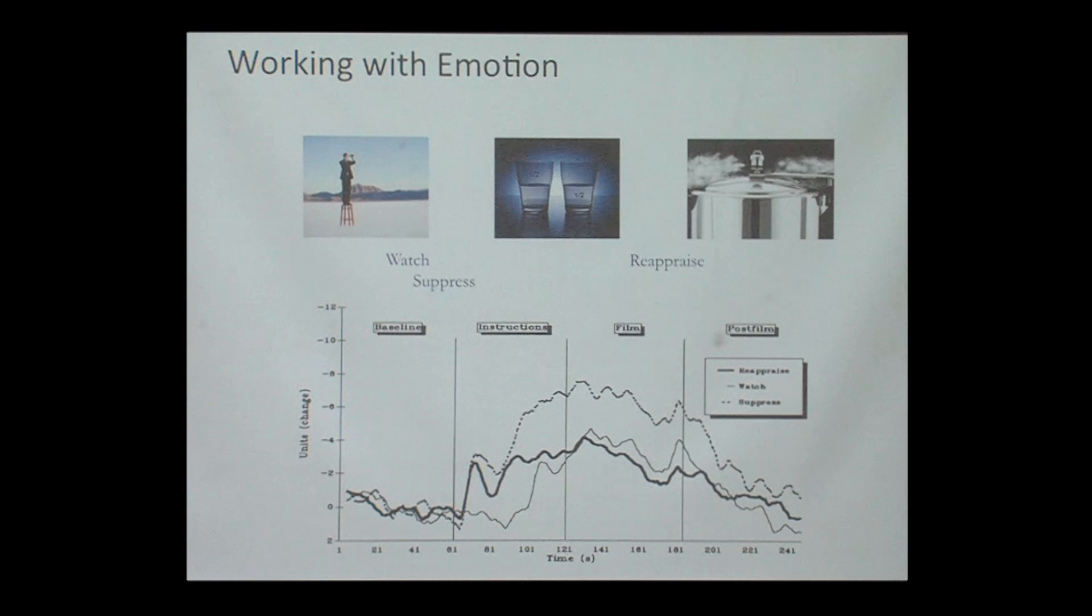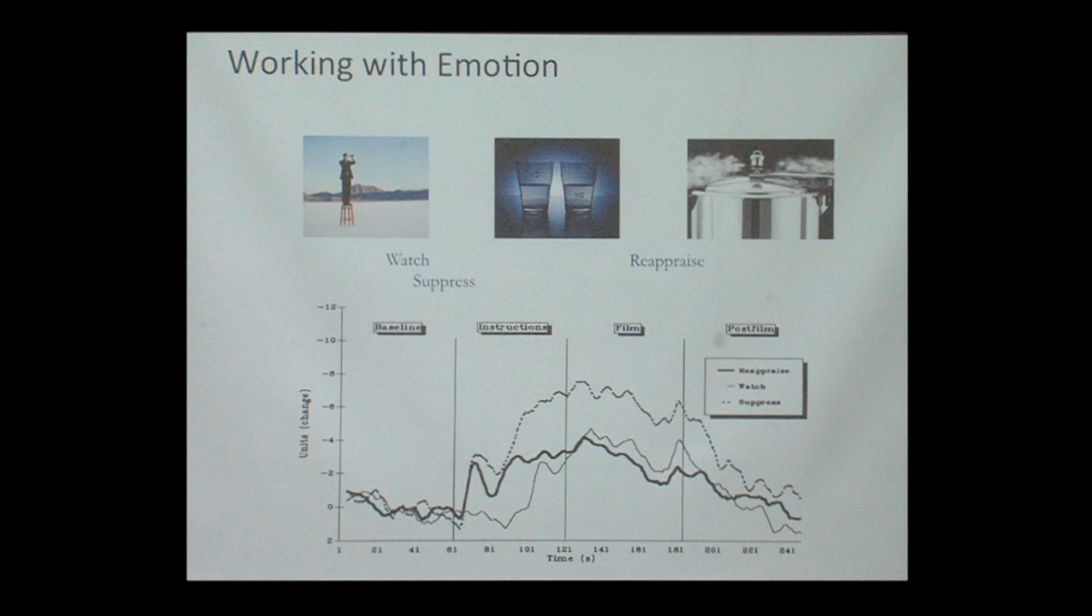And what we see here is something interesting. So the suppress is this dotted line, and what we're seeing of the units of change is heart rate and skin conductance. So how elevated is our physiological arousal with a very blunt measure?